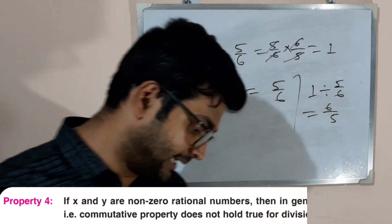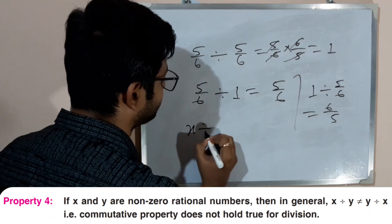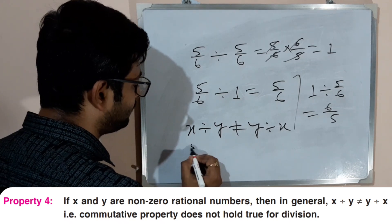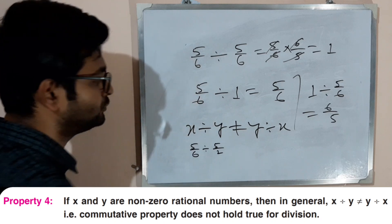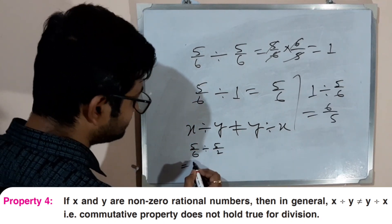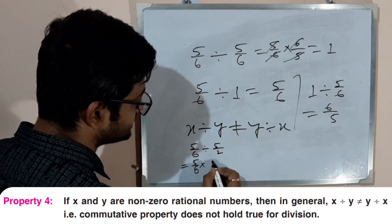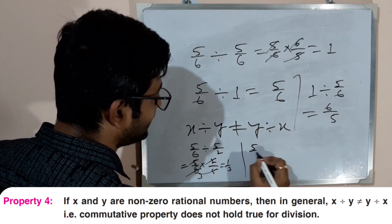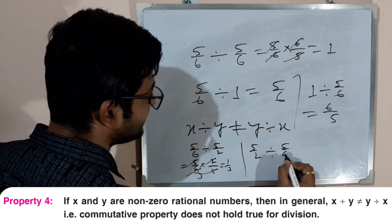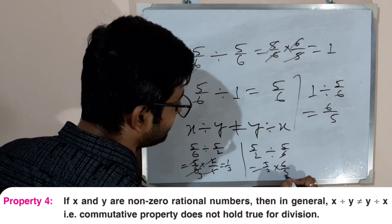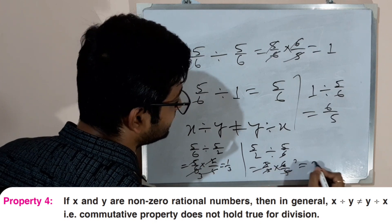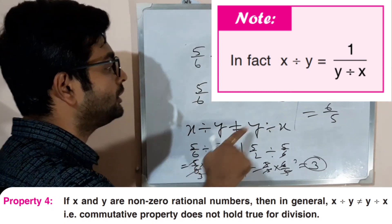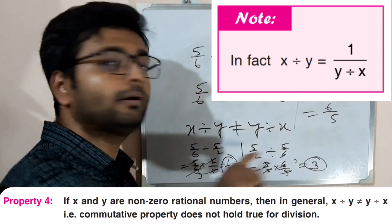Property number four: if x and y are two non-zero rational numbers, then in general x divided by y does not equal y divided by x. For example, 5 by 6 divided by 5 by 2 — changing the divide sign gives 5 by 6 into 2 by 5, cancelling gives 1 by 3. But 5 by 2 divided by 5 by 6 gives 5 by 2 into 6 by 5, which equals 3. So both are not the same.